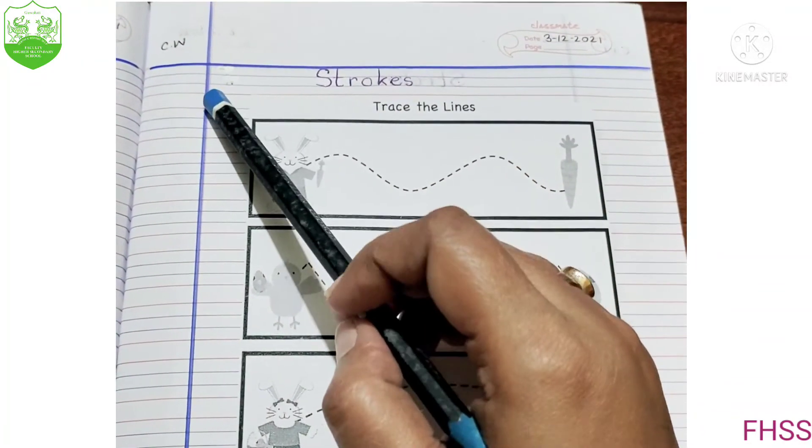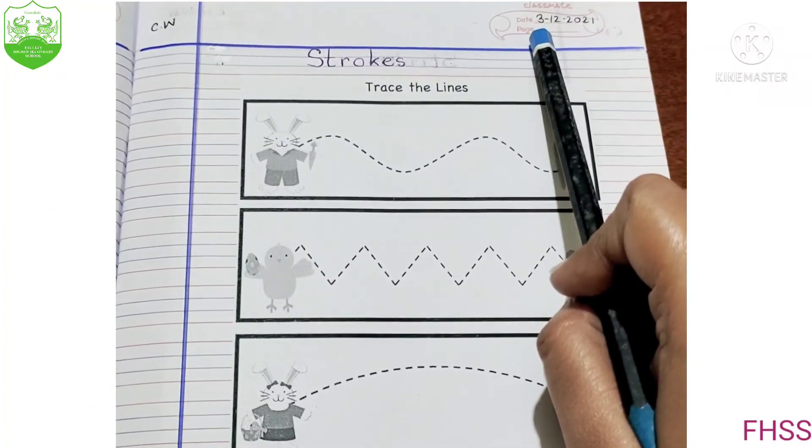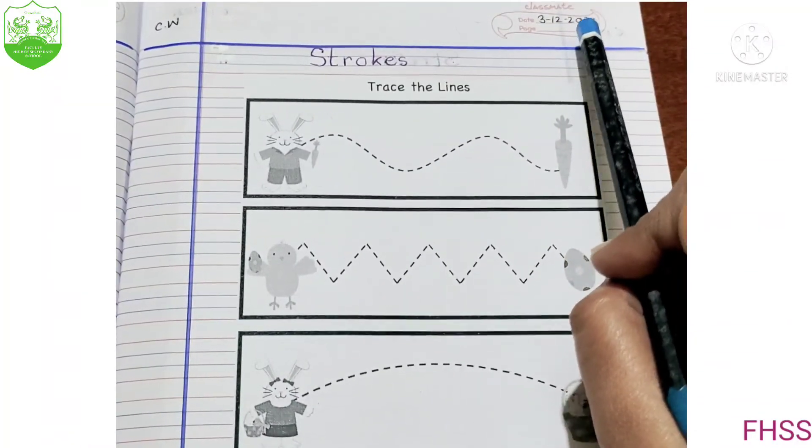Your parents will draw like this margin. They will write here CW and today's date. Today's date is 3rd December 2021.